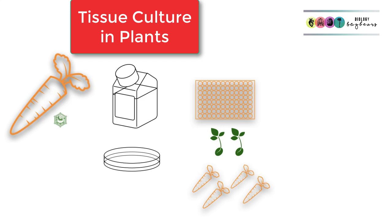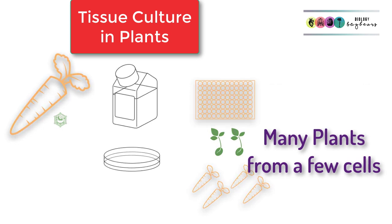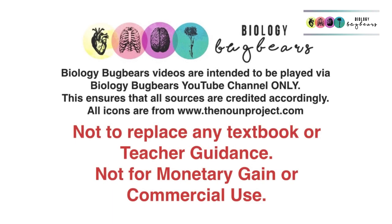Another example, a plant-based one, is micropropagation, where a few plant cells give rise to many identical plants that can then grow into adult plants. That was cell diversity. Remember, these videos don't replace using a textbook, doing past papers, or listening to your teacher.